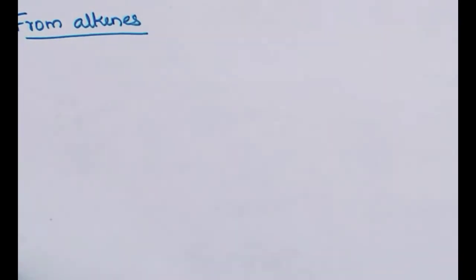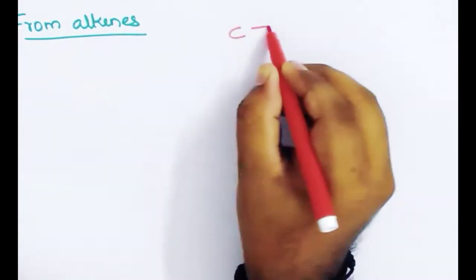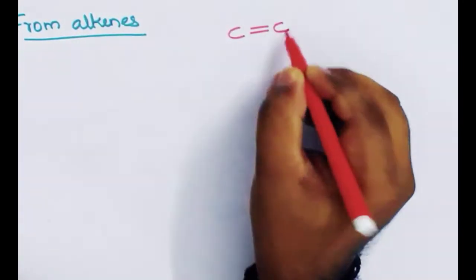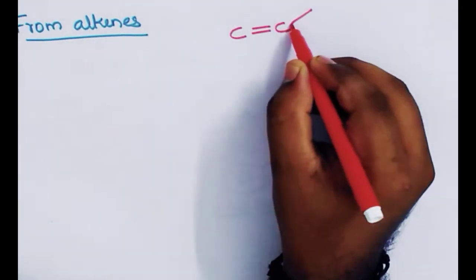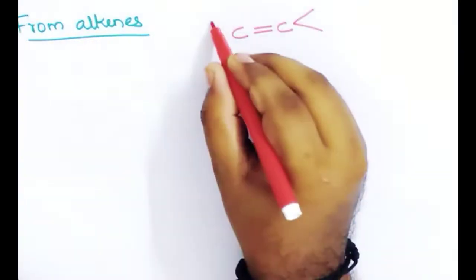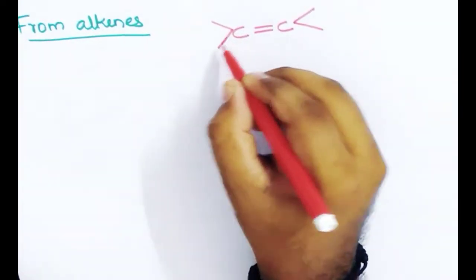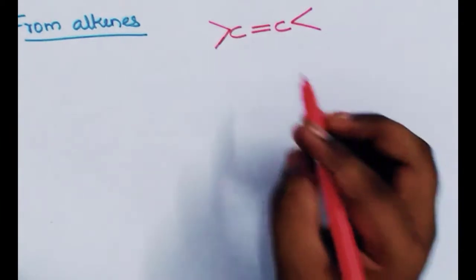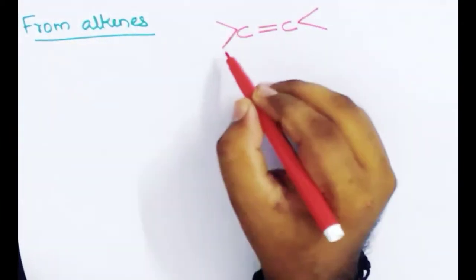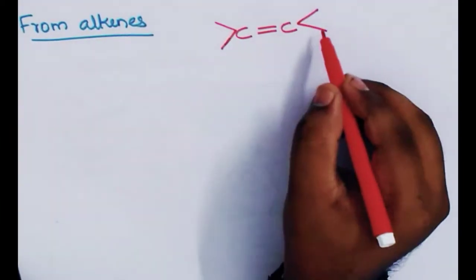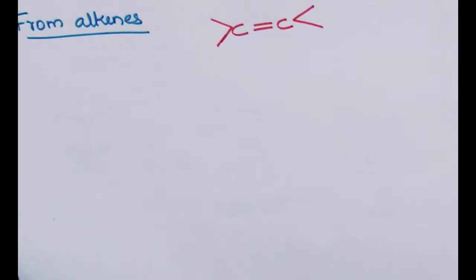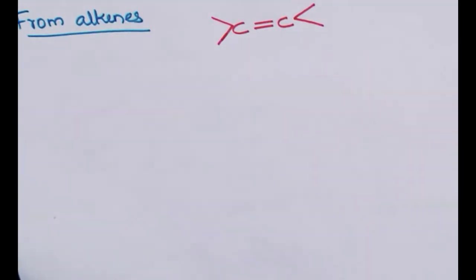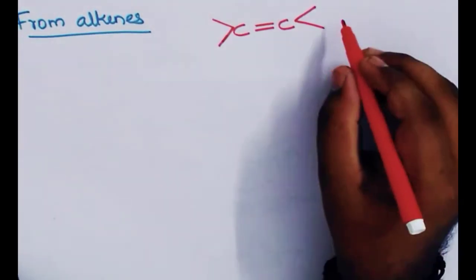Haloalkenes contain alkenes, which have a C double bond C (carbon-carbon double bond). We need to consider the carbon valence. Here we have two valences. We will balance these accordingly, and this reaction will help us move forward.